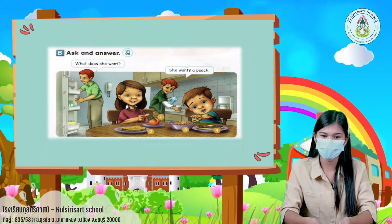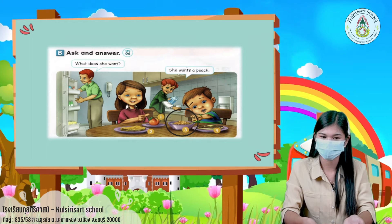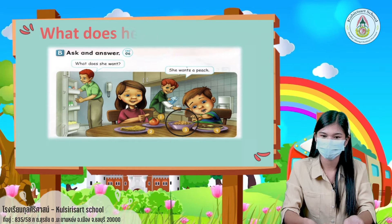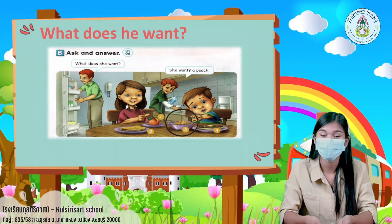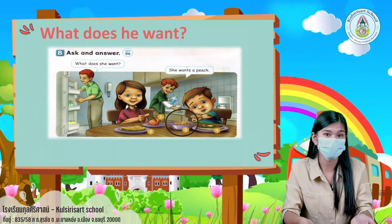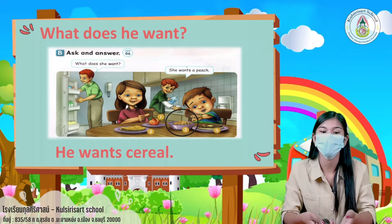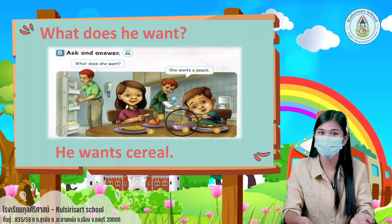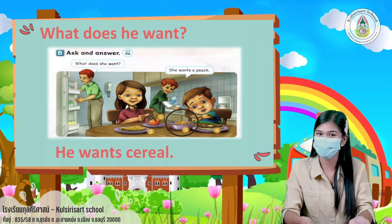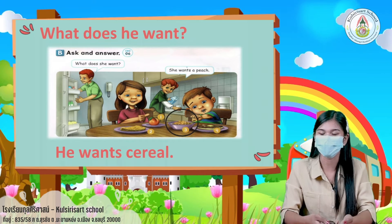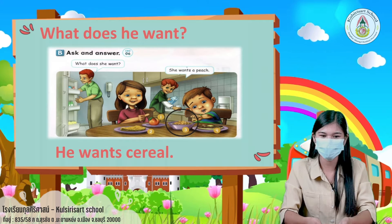Next, picture number three. Look at the boy. What does he want? He wants cereal. Okay, great!